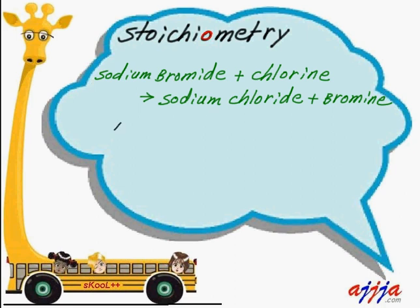Sodium is Na. Now bromide, which is Br. So NaBr plus chlorine — chlorine is Cl. That yields sodium chloride. But it depends on how strong the bromine is and how strong the chlorine is. Actually, chlorine is more active.